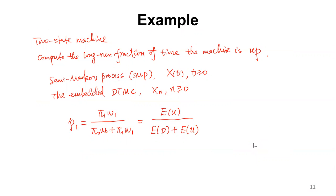Revisiting the two-state machine: compute the long-run fraction of time the machine is up. Since up is state 1, this is p1 = π1 * w1 / (π0 * w0 + π1 * w1). With π0 = π1 = 1, w1 = E[U], and w0 = E[D], this simplifies to E[U] / (E[U] + E[D]).